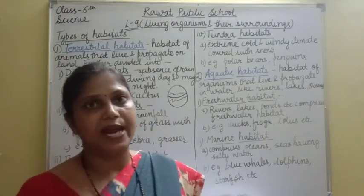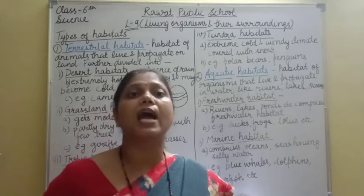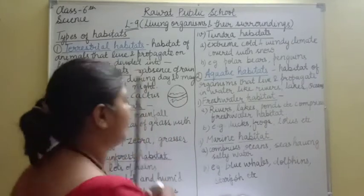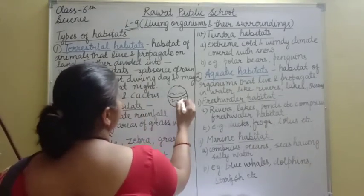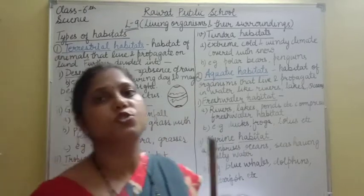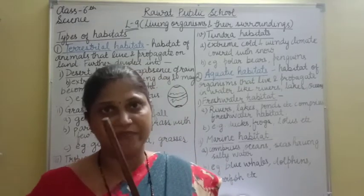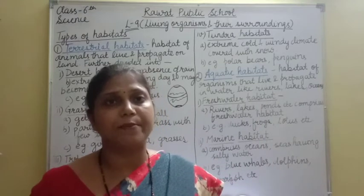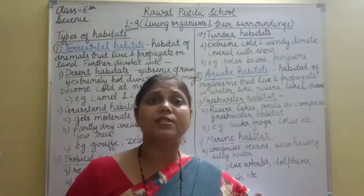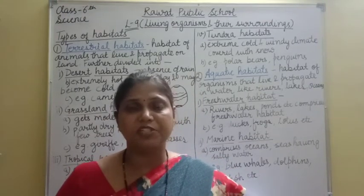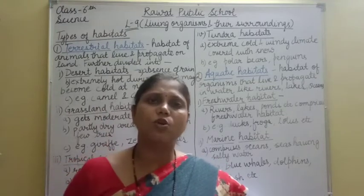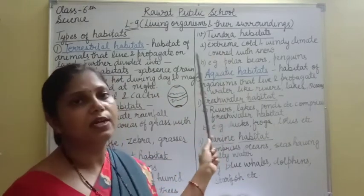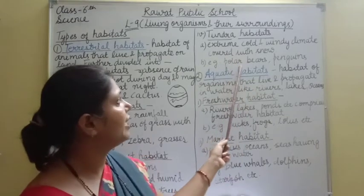Last type of terrestrial habitat है tundra habitat. Tundra habitat near to the poles होता है — polar regions के पास, जैसे north pole और south pole. जो plants और animals वहां survive करते हैं, these come under tundra habitat. क्योंकि polar regions हैं, इसलिए वहां का climate बहुत ज़्यादा cold और windy होता है — बहुत ज़्यादा snow की वजह से temperature बहुत ज़्यादा low रहता है.